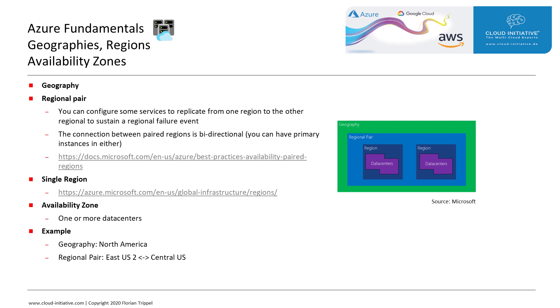Note that in Azure, an availability zone consists of one or more data centers, and that each availability zone belongs to a region.